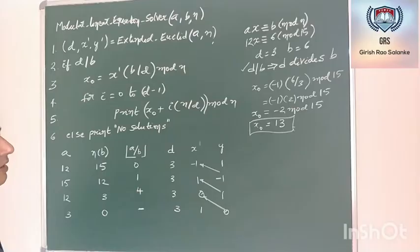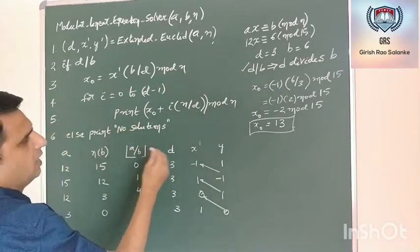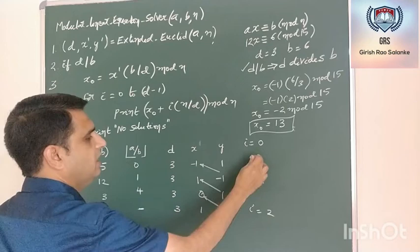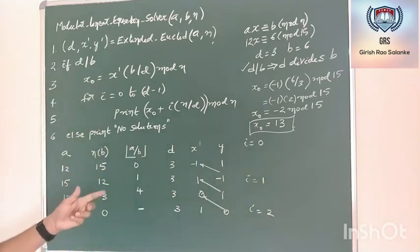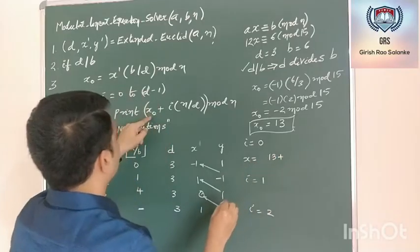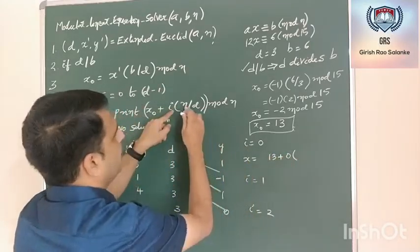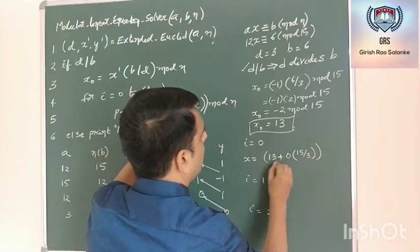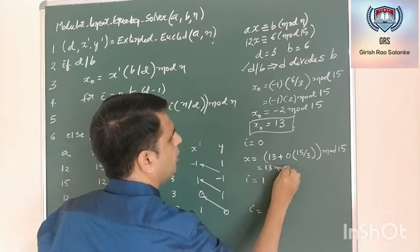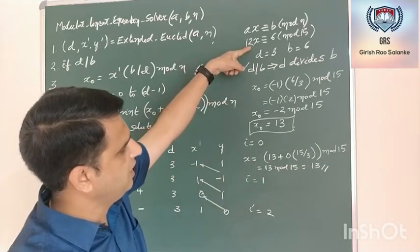From this x naught, I can find the other values of x. For i equal to 0 to d minus 1 — d value is 3 — I will have 3 iterations. In each iteration, x is calculated as x naught plus i times (n divided by d) mod n. For i equal to 0: x equals 13 plus 0 times (15 divided by 3) mod 15, which is 13 plus 0 mod 15, which equals 13. So the first value of x that solves this linear equation is 13.